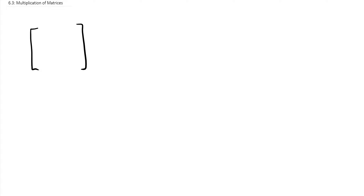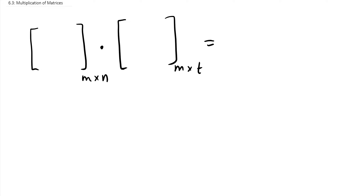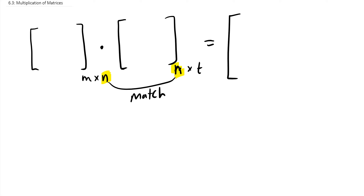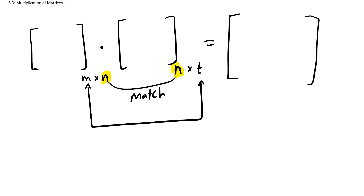Say we have a first matrix of size m by n, and we want to multiply it by another matrix of size n by t. We can multiply these two matrices because whatever the first matrix ends with and the second one starts with — if they match, then we're allowed to multiply. The result will be an m by t matrix.